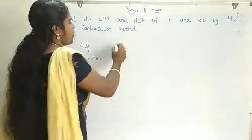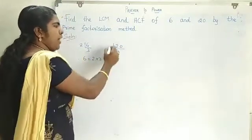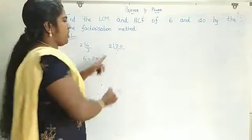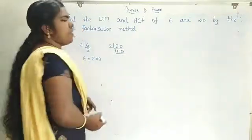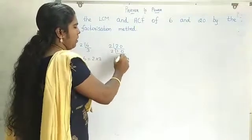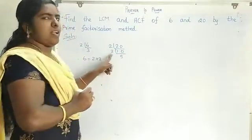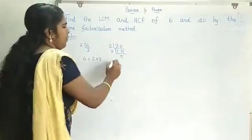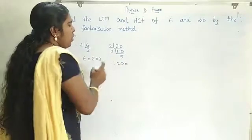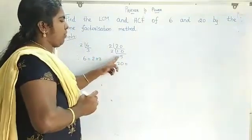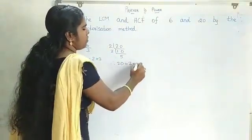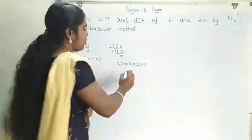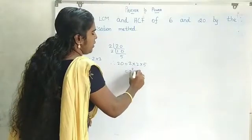Again, the number is 20. 20 is divisible by 2: 2 times 10 equals 20. Again, 10 is divisible by 2: 2 times 5 equals 10. 5 is a prime number, so we stop this process. Therefore, 20 is equal to 2 into 2 into 5, which equals 2 squared into 5.